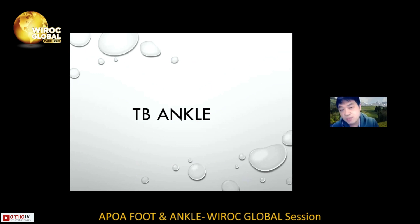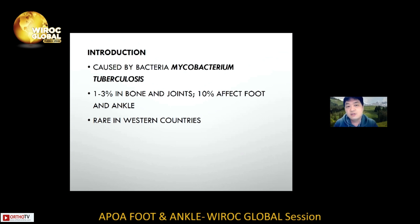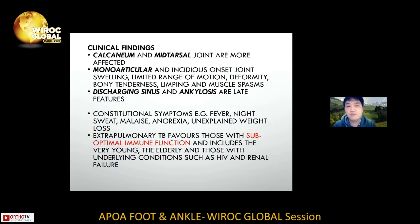We will now have a short review about TB ankle. It is caused by Mycobacterium tuberculosis, which is relatively common in Hong Kong. About one to three percent of TB cases affect bone and joint, and of that one to three percent, only about ten percent affect the foot and ankle. It is quite rare in Western countries. The calcaneum region and metatarsal joints are most commonly affected, with predilection for more articular involvement. Discharging sinuses or ankylosis are late features, rarely seen nowadays in Hong Kong.